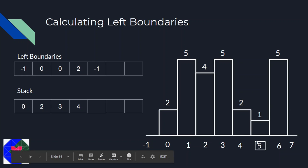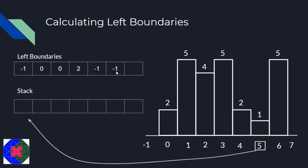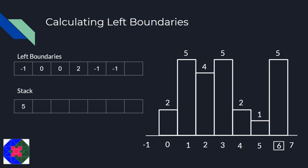At index 5 with height 1, the stack contains indices 0, 2, 3, 4. We pop index 4 (height 2 > 1), then index 3 (height 5 > 1), then index 2 (height 4 > 1), then index 0 (height 2 > 1). The stack becomes empty, so the left boundary is minus 1. We push index 5 into the stack. Similarly for index 6, the left boundary will be 5.